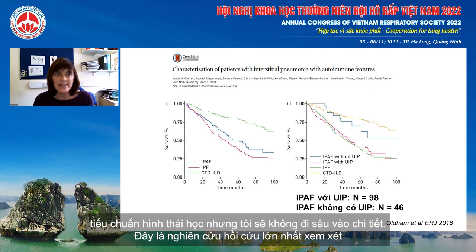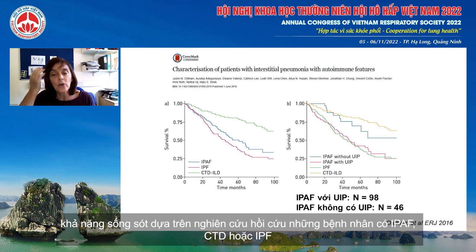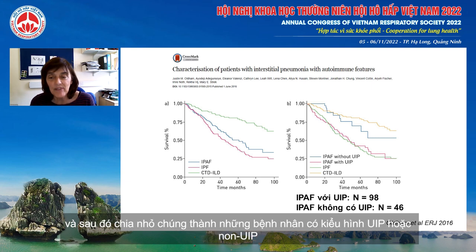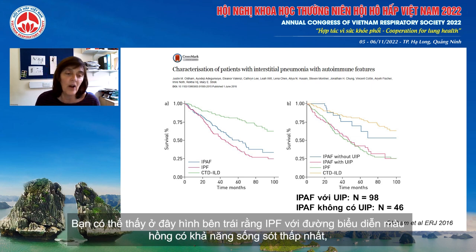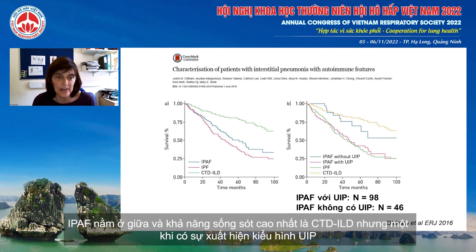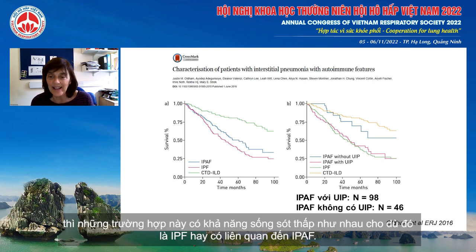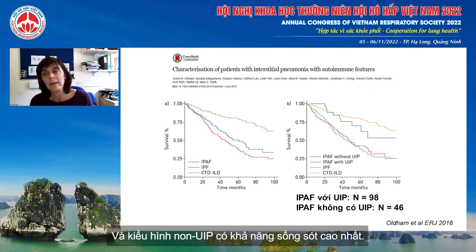This is the largest study looking retrospectively at survival according to whether patients had IPAF, CTD, or IPF, subdivided by UIP or non-UIP pattern. IPF had the worst survival, IPAF was in the middle, and the better survival was CTD-ILD. But once UIP is taken into account, UIP has an equally bad survival whether it's idiopathic or associated with IPAF, and a non-UIP pattern has a better survival.